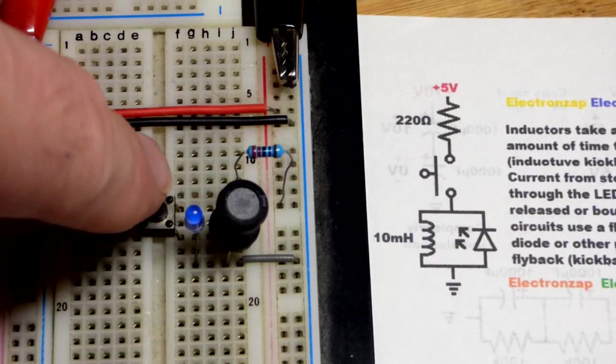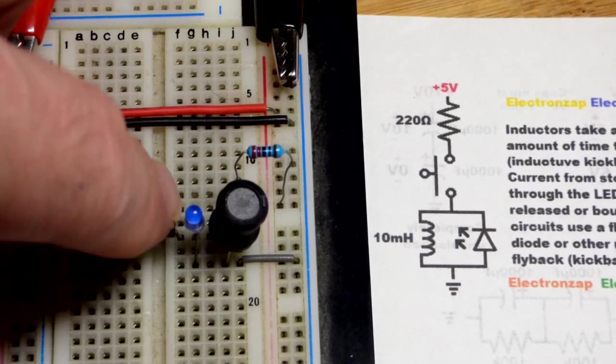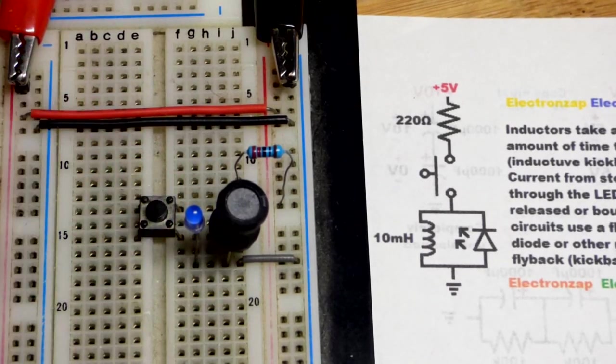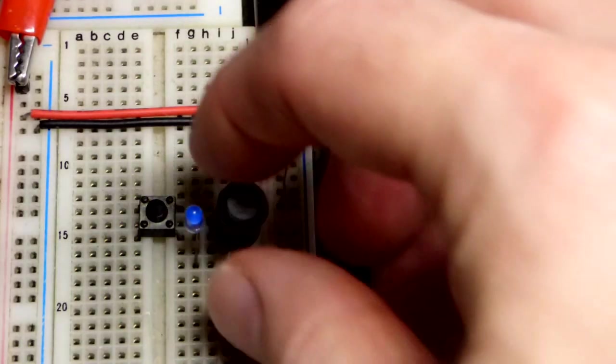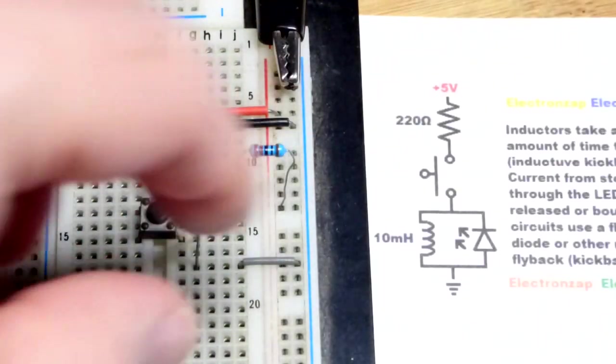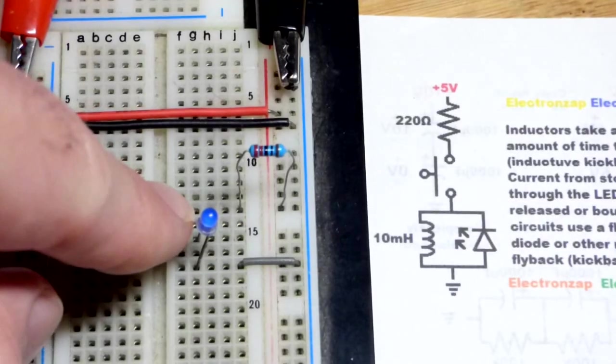In fact, the best thing to do is press that quicker than what I can press it. But in any case, you can see a little bit of light. What's happening is we have this inductor here. So the LED is reverse bias. Closing the switch does not turn the LED on at all right there.